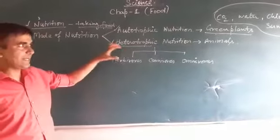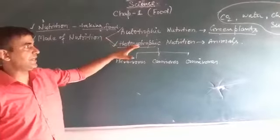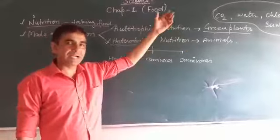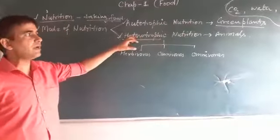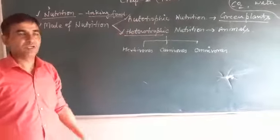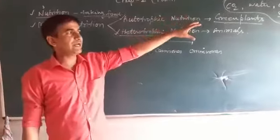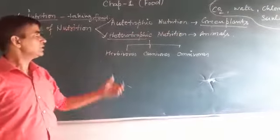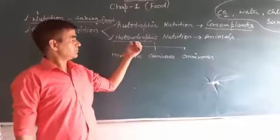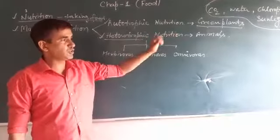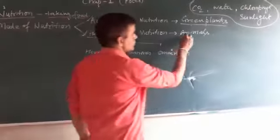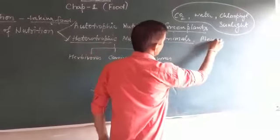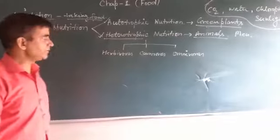We and other animals depend on green plants or other animals for our food. We cannot make our food from simpler inorganic substances. So this is heterotrophic nutrition — examples include animals and human beings.